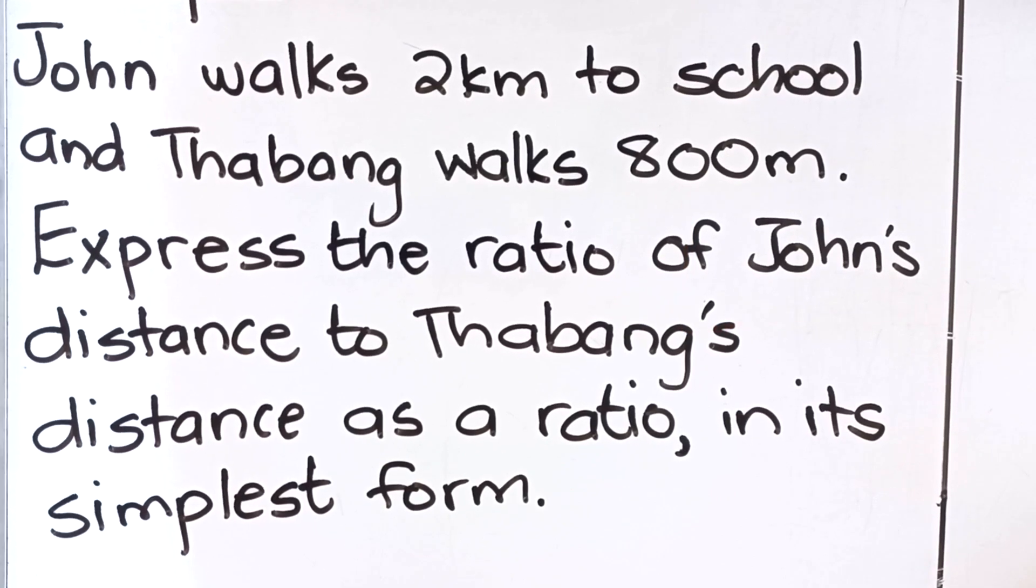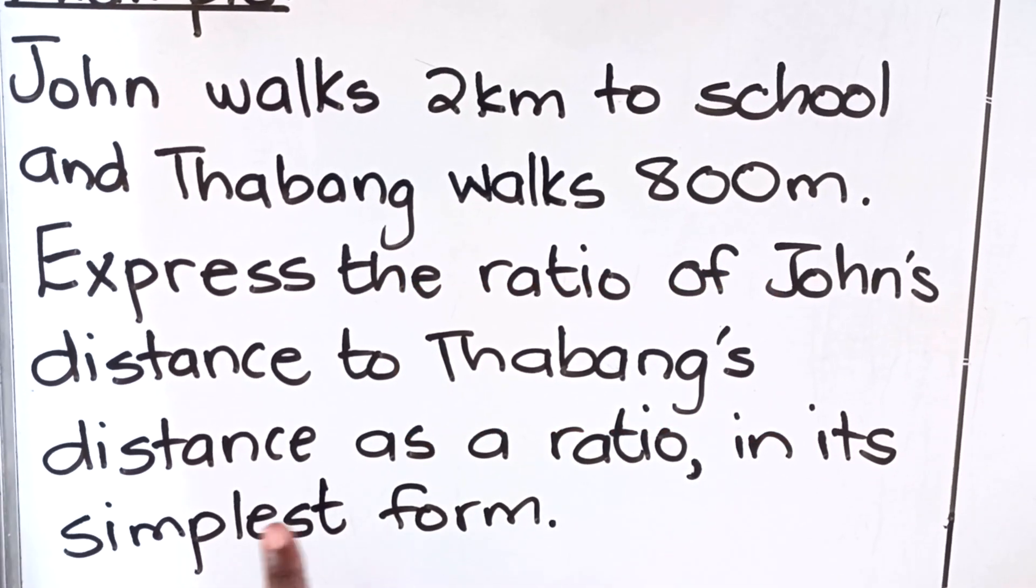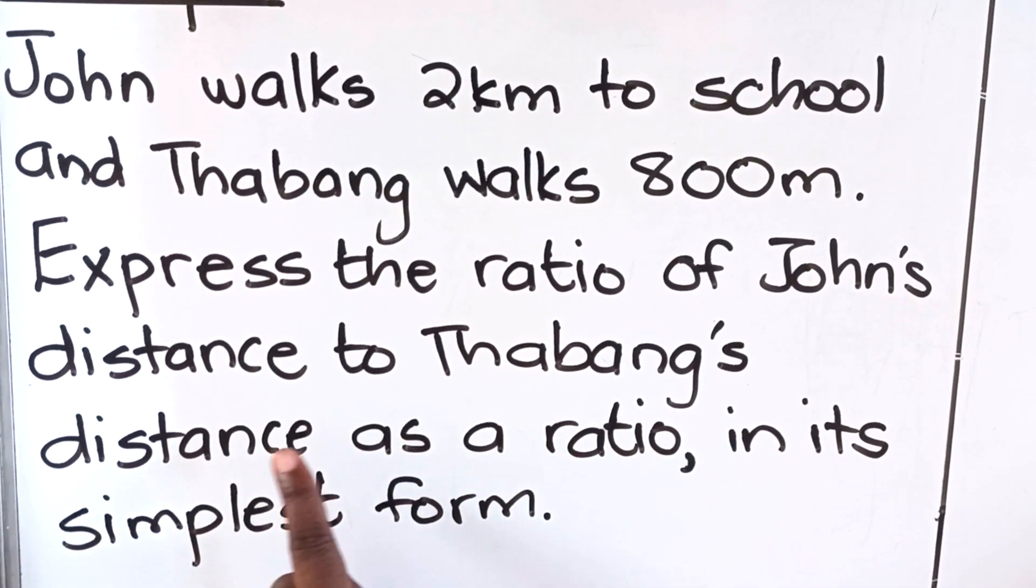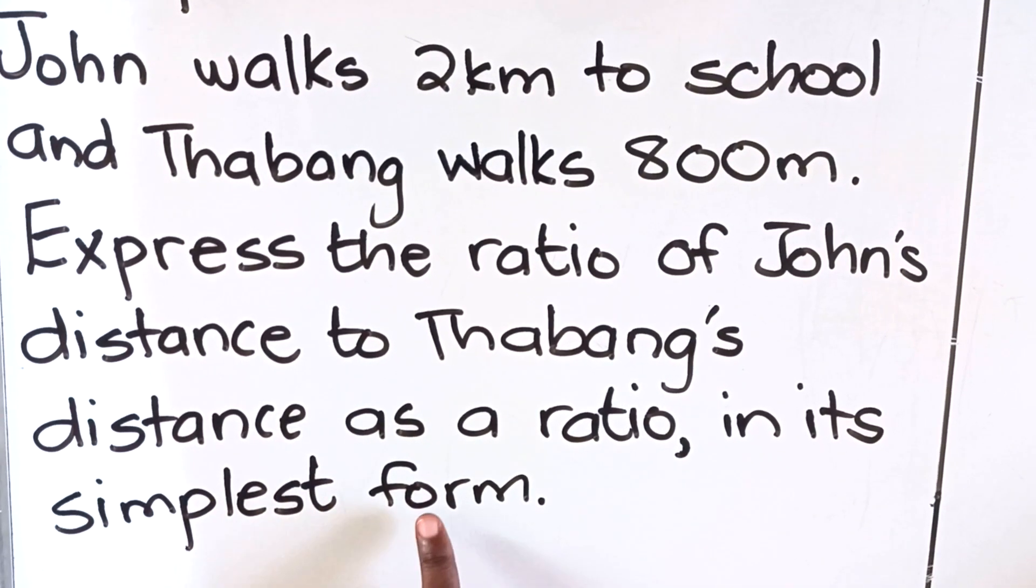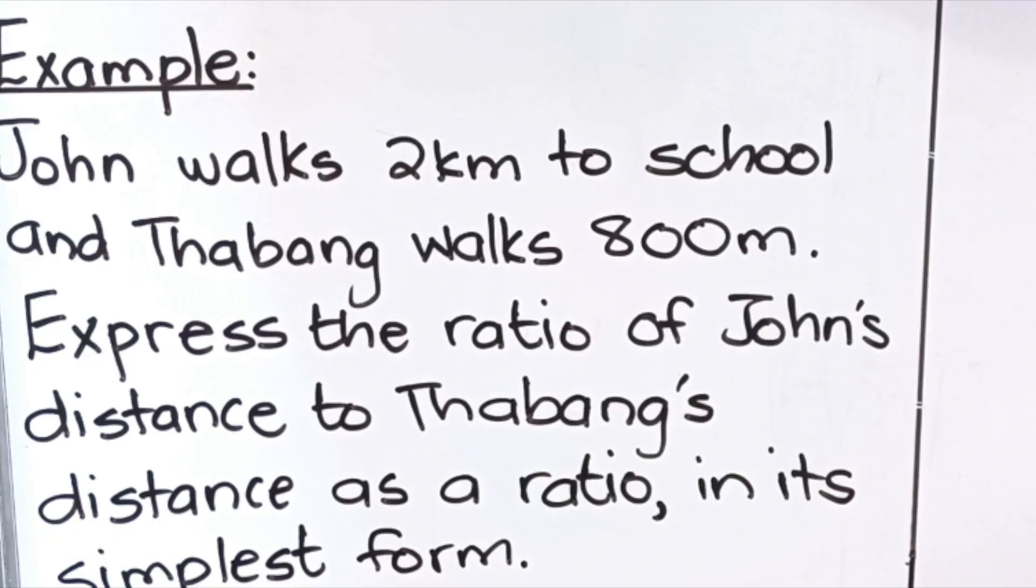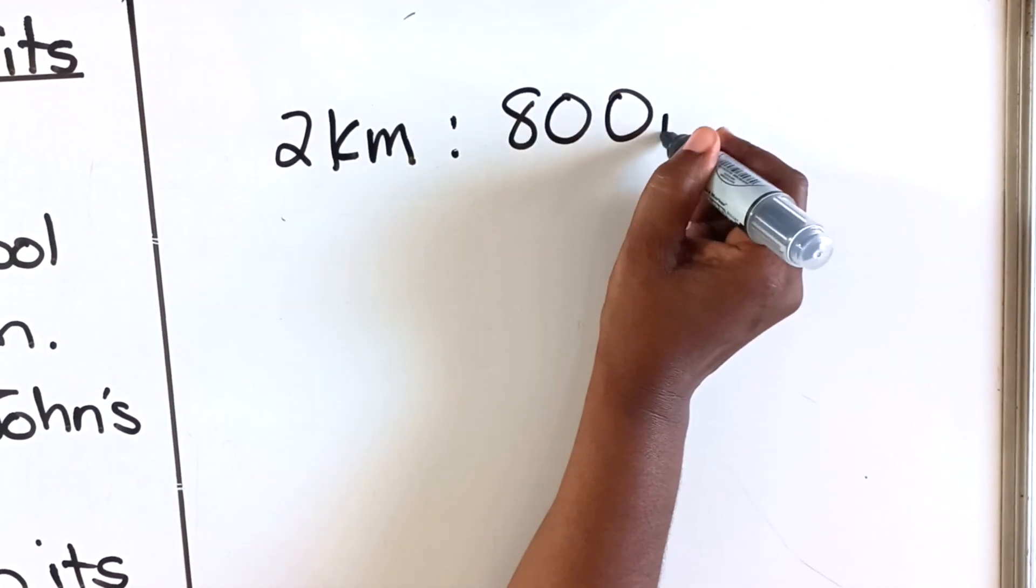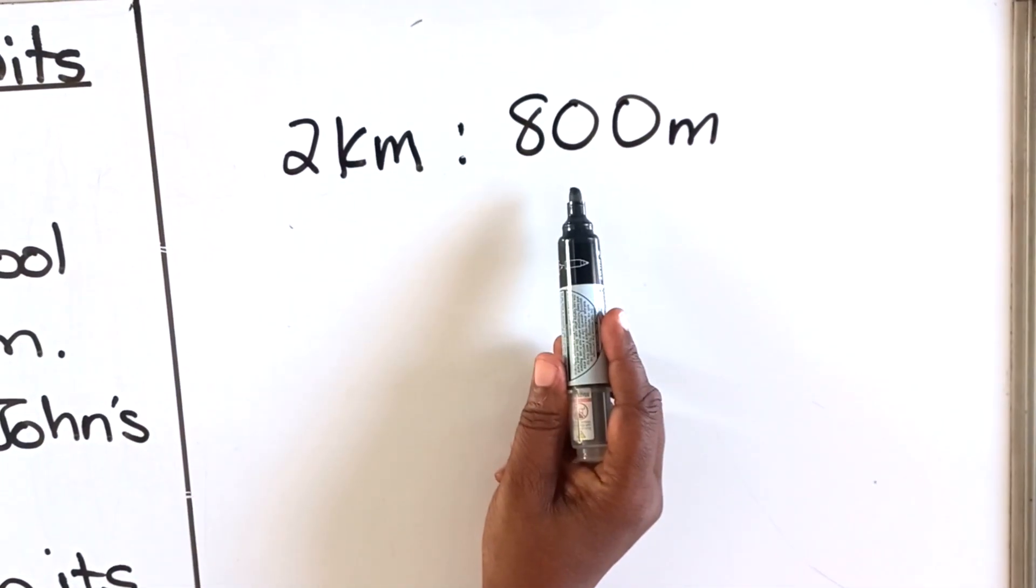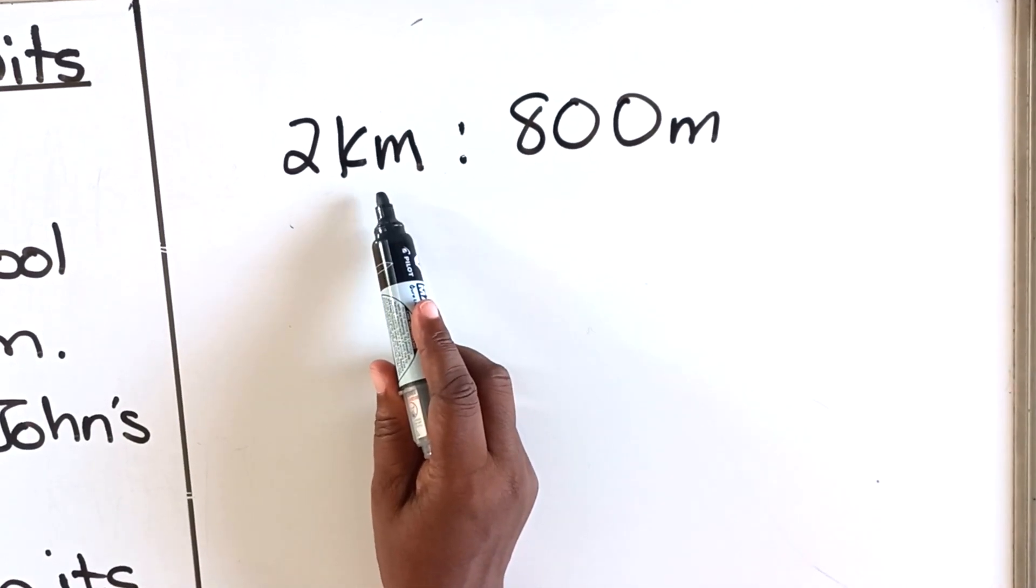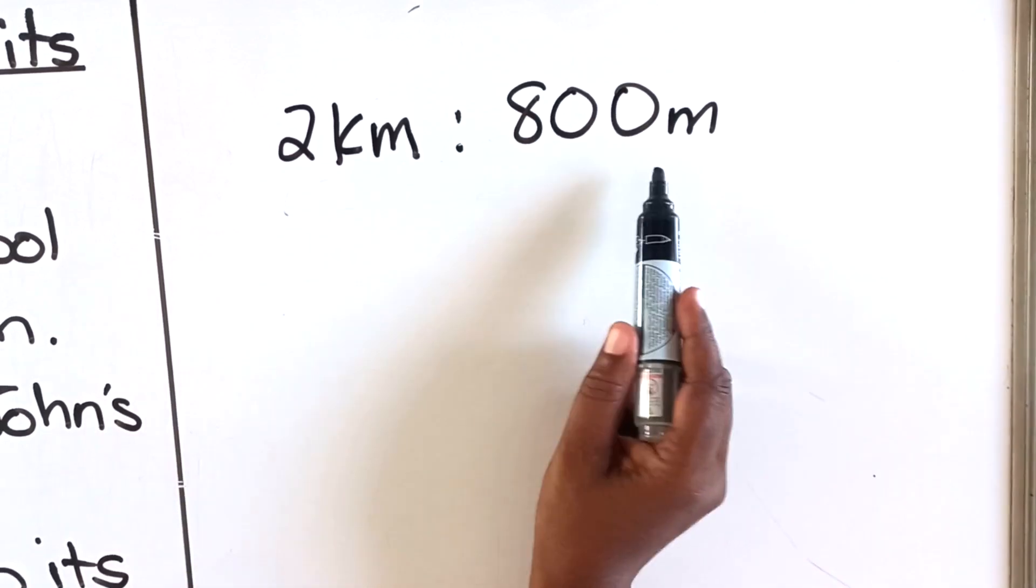When you write a ratio, the person that they wrote first you write their number first, and the person that they wrote second you write their number second. They say express the ratio of John's distance to Tabang's distance, so we're going to write John's distance first and then Tabang's distance next. So John's distance is 2 kilometers to Tabang's 800 meters.